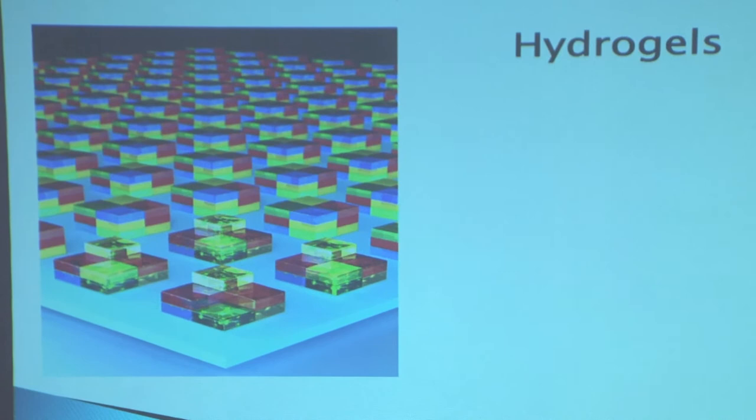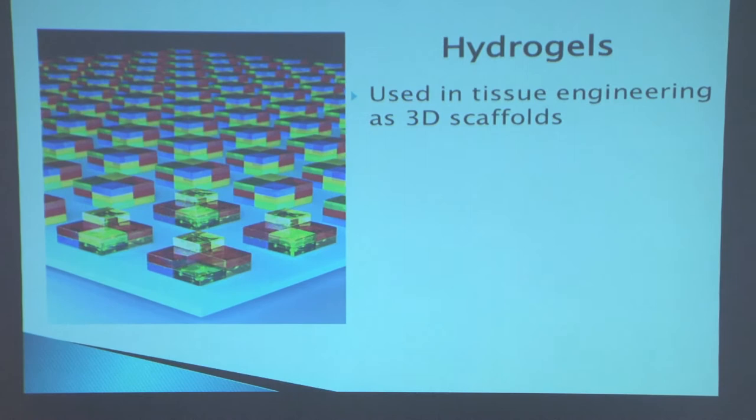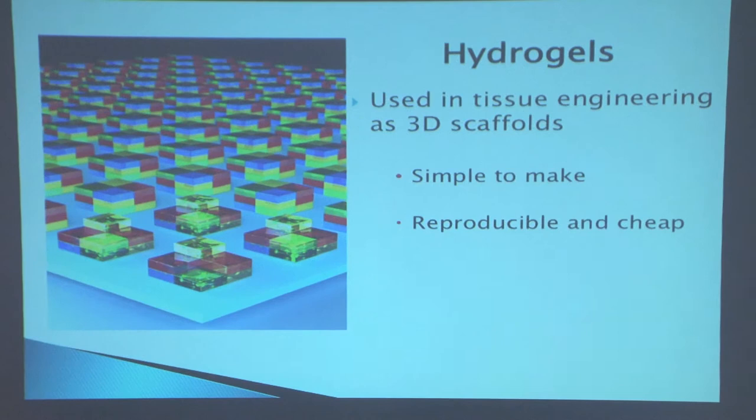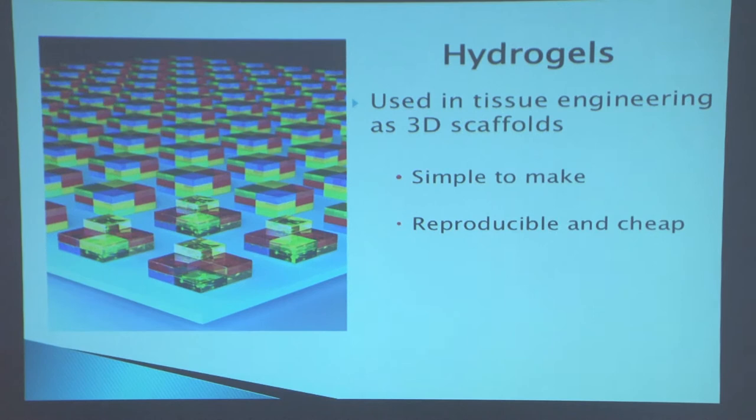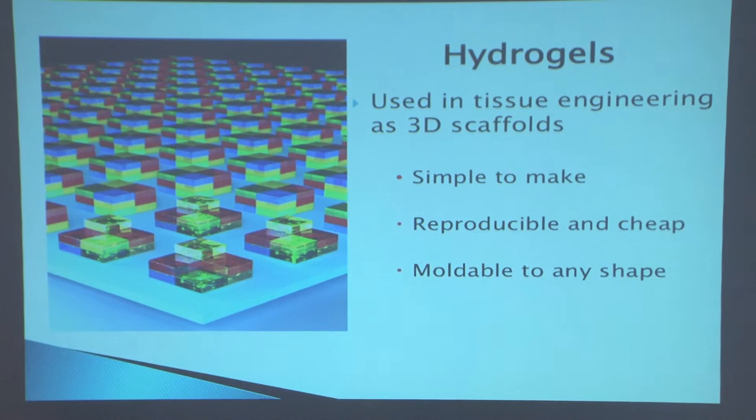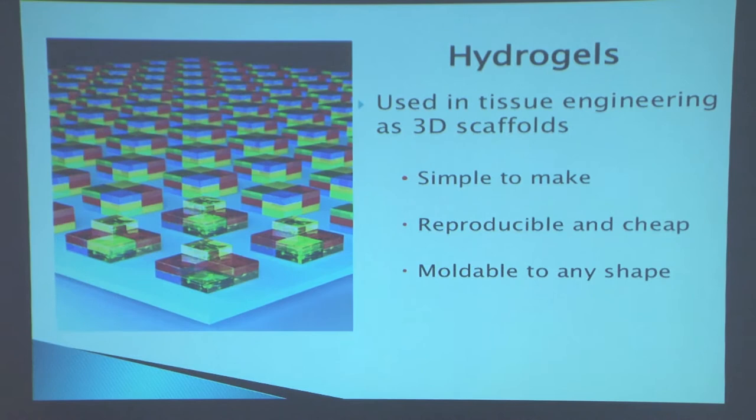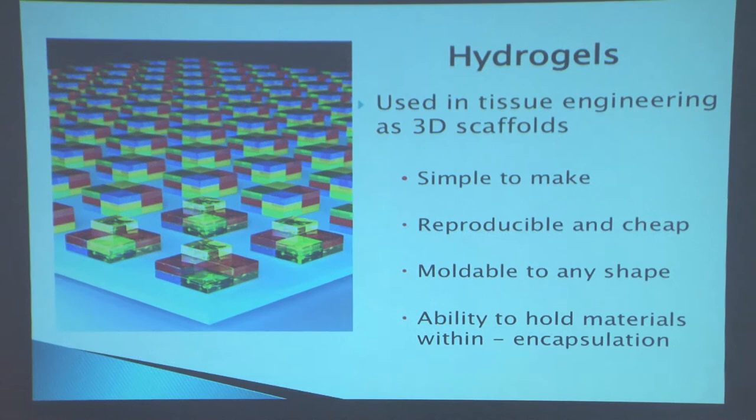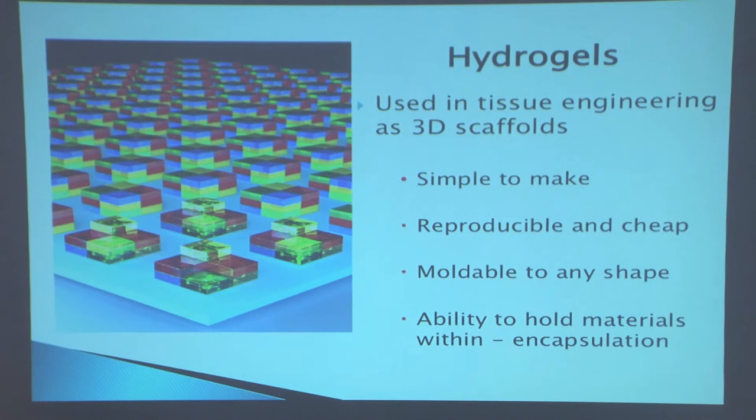Hydrogels, you actually see a lot in daily life. We, as tissue engineers, use it as scaffolds, 3D scaffolds to guide the cells. Why do we do that? First and foremost, it's because it's simple to make. The other one is it's reproducible and cheap. This is very important. If you're going to end up making a tissue or something 3D, you want to be cost efficient. It's moldable to any shape, very important. You don't want rigid constructs, you want something that's flexible. And probably one of the most important, you can encapsulate cells inside. This means you have the ability to manipulate the environment and have a little bit of control in the cell's environment.